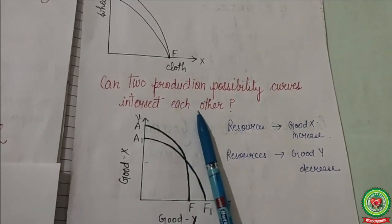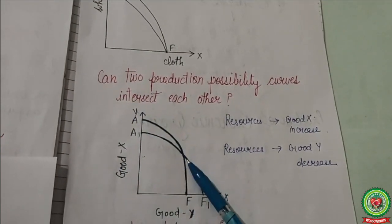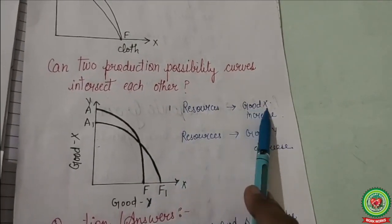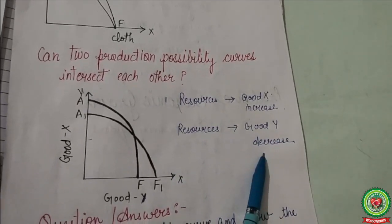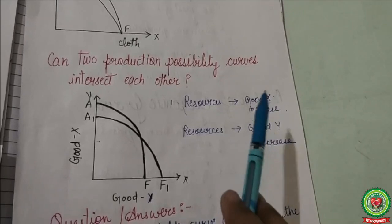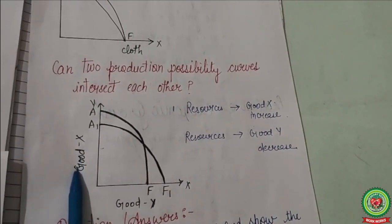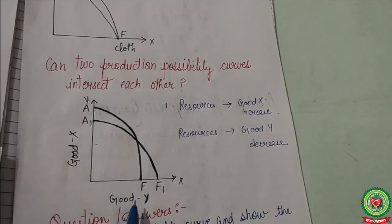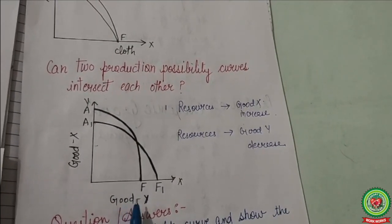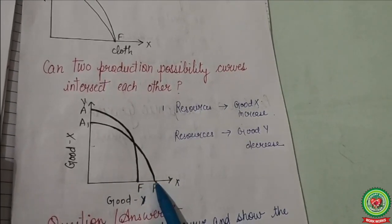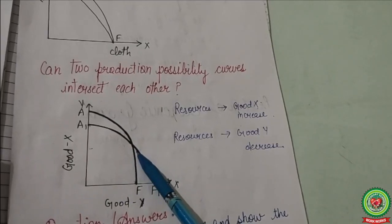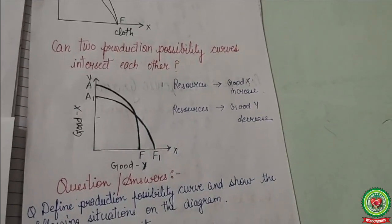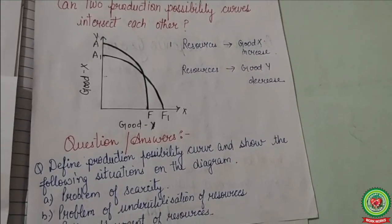Can two Production Possibility Curves intersect each other? Yes, two PPCs can intersect each other. This can happen when resources for Good X increase while resources for Good Y decrease. If resources for Good X increase, the PPC shifts upward; if resources for Good Y decrease, the PPC shifts inward. In this situation, the two curves can intersect or cut each other.